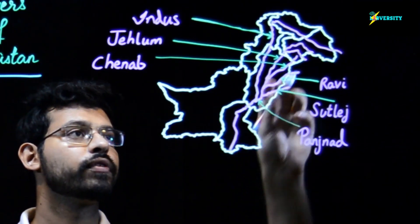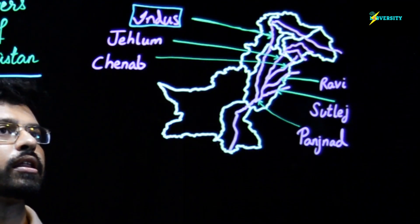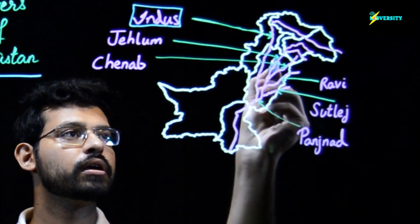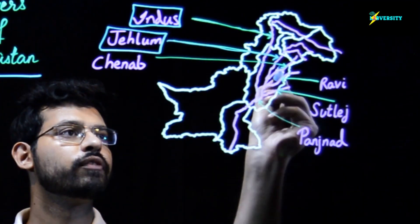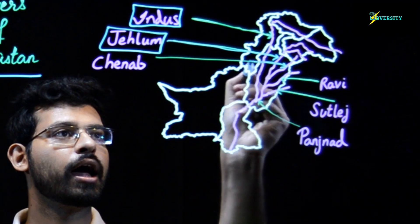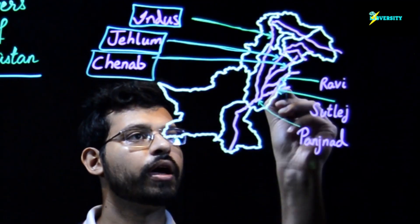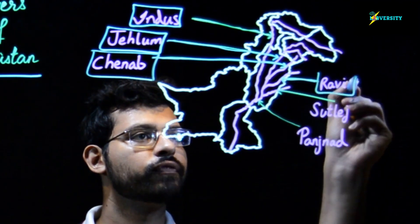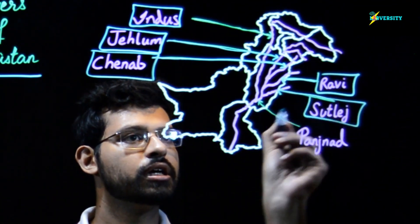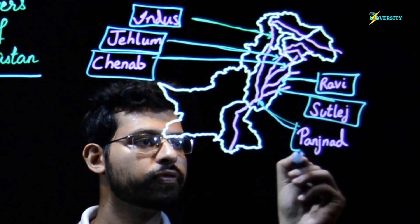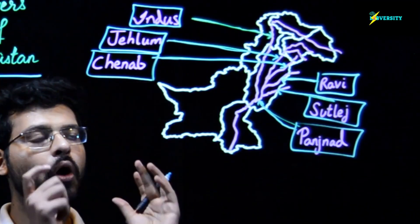On this map we have River Indus. Then this one is called River Jhelum. Then we have this one, which is called River Chenab. On the side we have this river — this is called River Ravi. Then we have River Sutlej, and this one over here is River Panjnad.